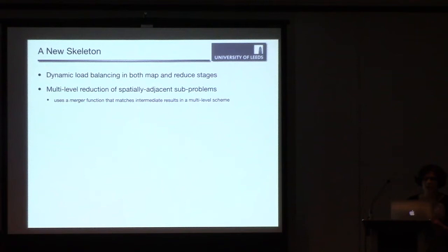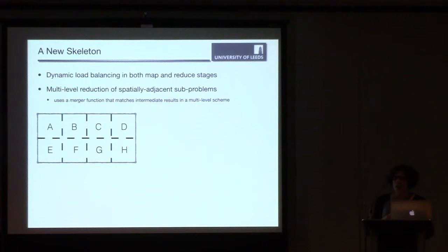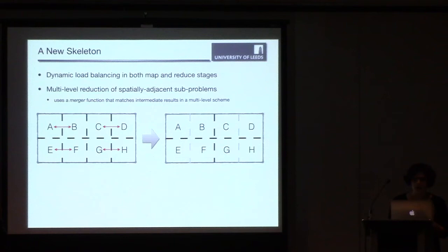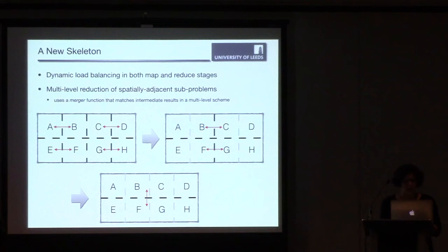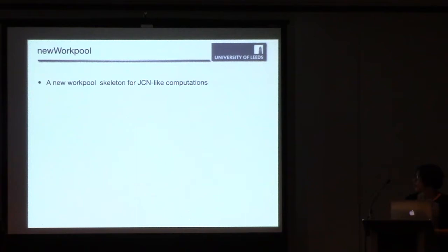So we need a new skeleton that has dynamic load balancing in both map and reduce. And also we can apply a multi-level reduction of intermediate results, considering the spatial adjacency relationship in the domain. So here's a simple example. It's a data set that is divided into eight sub-problems.